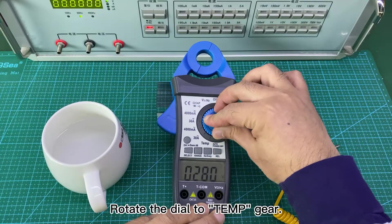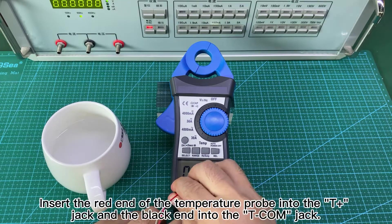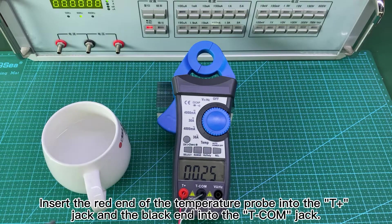Temperature test. Rotate the dial to temp gear. Insert the red end of the temperature probe into the T plus jack and the black end into the T com jack.